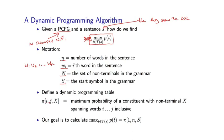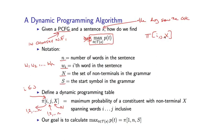Pi is going to have three indices. X is a non-terminal. i is a first index in the range 1 to n, and j is also some value in the interval 1 to n, and we always have i less than or equal to j. So we only consider entries pi(i, j, X) where i is less than or equal to j. This is going to be defined as the maximum probability of a constituent with non-terminal X spanning words i to j inclusive.